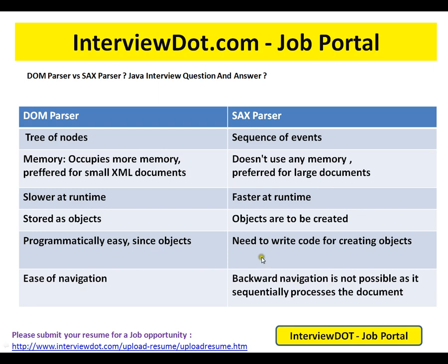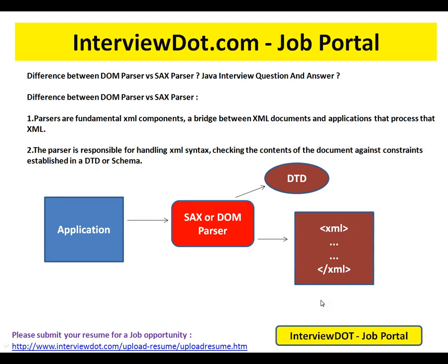DOM parser is programmatically easy since objects are already available, whereas with SAX, for each event it calls you back and you have to create the object yourself. In terms of navigation, backward navigation is not possible in SAX as it sequentially processes the document. So these are the differences between SAX and DOM parser. Essentially, a parser helps convert the XML document and allows the Java application to create objects.